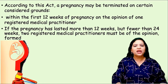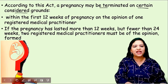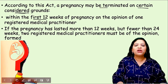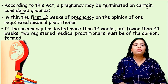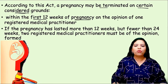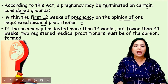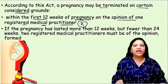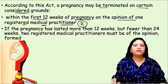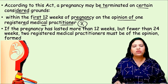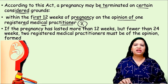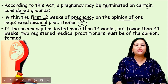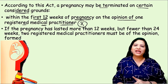According to this act, pregnancy may be terminated on certain considered grounds. If somebody wants to do MTP, first it should be within the first 12 weeks of pregnancy — that means in the earlier stage. For the first 12 weeks of pregnancy, the opinion of one registered medical practitioner is compulsory. A doctor's certificate should be there certifying that if the pregnancy is not aborted, the growing embryo may harm the mother and there is a danger for the mother's health.